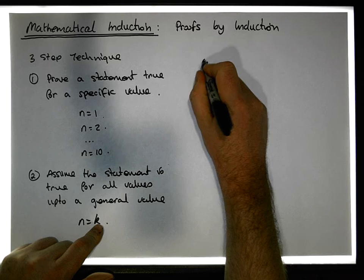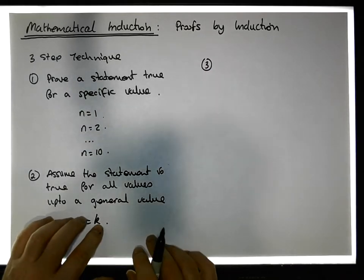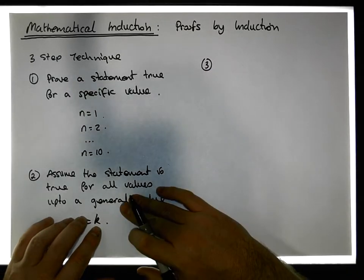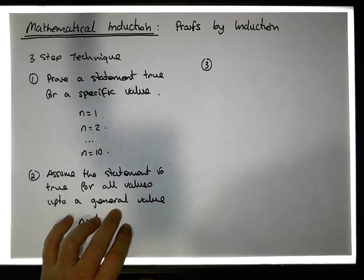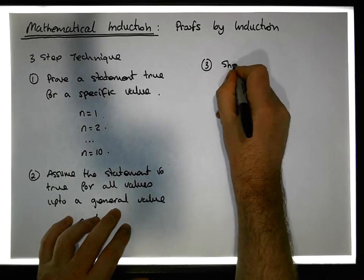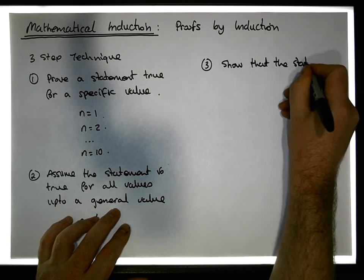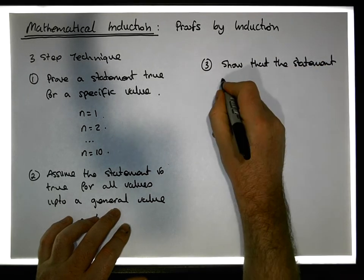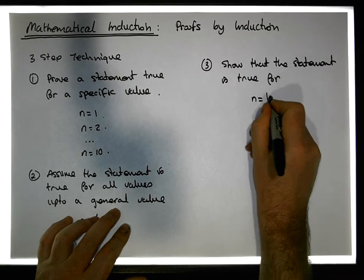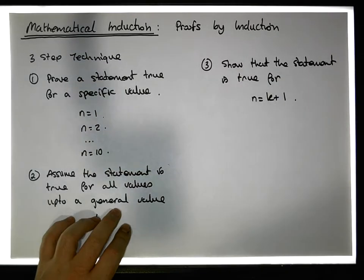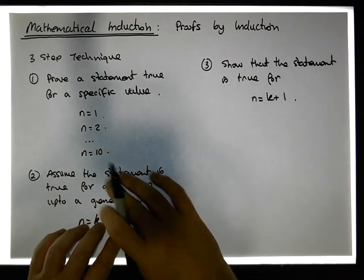Then the third step — which is the inductive step — based on this assumption and the base case, is to show that the statement is true for n equals k plus one, or prove that the statement is true for n equals k plus one after making this assumption.